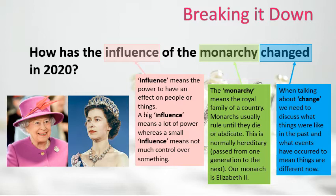When talking about change, which is a significant part of this question, we need to talk about how things have changed over time. So to do that we need to discuss what has come before and how things have occurred in order to change and cause differences when compared to now. So when looking at how the influence of the monarchy has changed in 2020, we need to look at what that influence was and what has happened to change it.